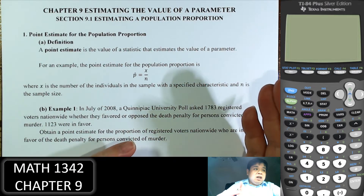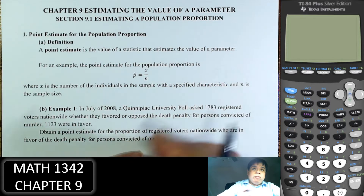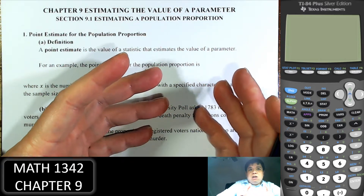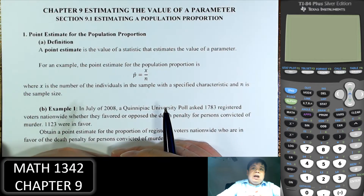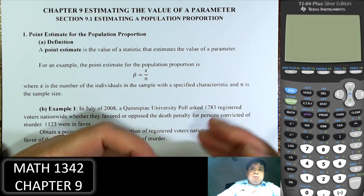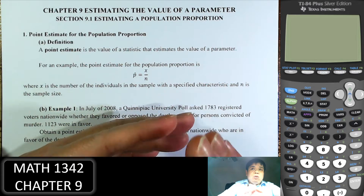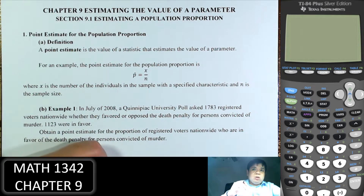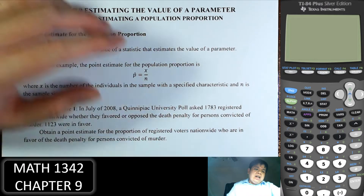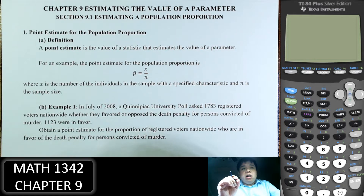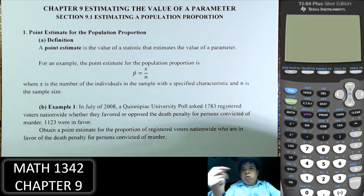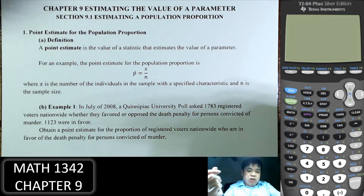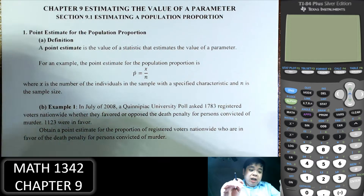For example, before any election there's a poll. A poll is just a sample of, let's say, 6,000 people, and with that we estimate how many of them vote a certain way. The result from a sample is used to estimate the result for the population. If you're watching the news during an election, they say based on the poll that some certain people will vote a certain way with a margin of error. That's exactly what we study in this section.